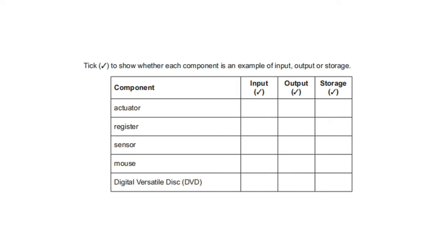Tick to show whether each component is an example of input, output, or storage. Actuator — output device. Register — storage device. Sensor — input device. Mouse — input device. DVD — storage device.